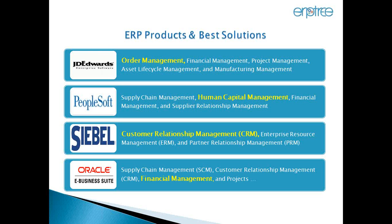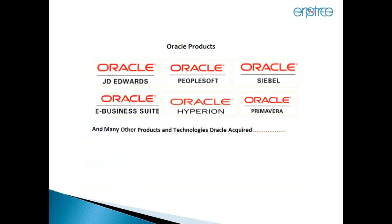Oracle addressed this by acquiring many ERP products. Oracle already owned Oracle E-Business Suite. Then they acquired JD Edwards, making it Oracle JD Edwards. Similarly, Oracle acquired PeopleSoft, now Oracle PeopleSoft. They also acquired Siebel, Hyperion — a reporting, budgeting, and planning tool — and Primavera for project management. There are many other acquired products as well.